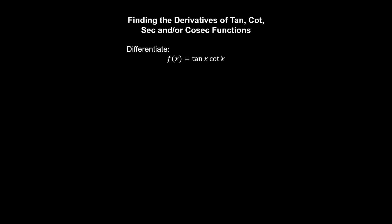Let's find the derivative of tan(x) by cotangent of x. Well, we can use the product rule, or use trig identities first to simplify the function. So tan(x) is sin(x) on cos(x), and the cotangent of x is cosine of x on sin(x). And therefore this gives 1, and the derivative of a constant is 0.